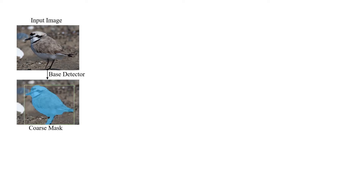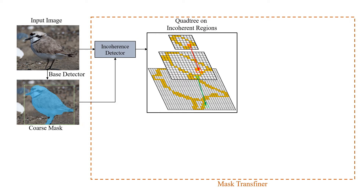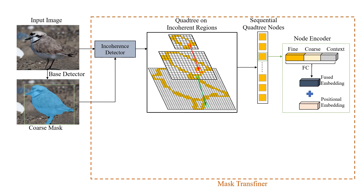Here is the framework overview of Mask Transfiner. Given an input image, we employ the base object detector to output instance bounding boxes and initial coarse masks at a low resolution. Then we construct an ROI pyramid. To identify incoherent regions at multiple scales, we employ a lightweight detector and organize the nodes with a quadtree structure, as only a small part of the high-resolution image features are processed by the refinement network. The encoder of Transfiner has two parts: the node encoder and the sequence encoder.